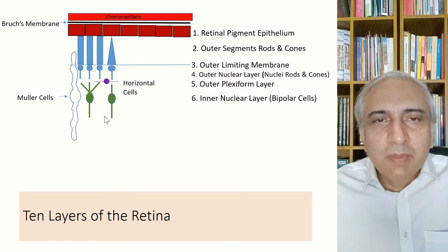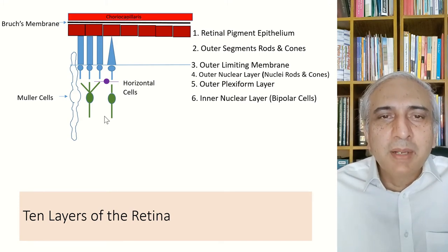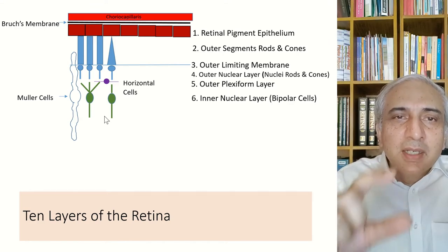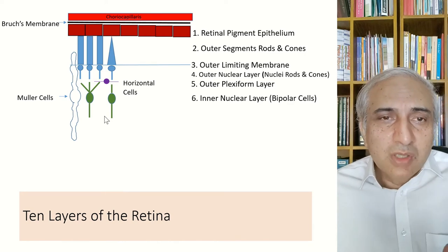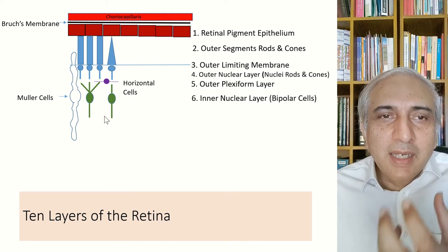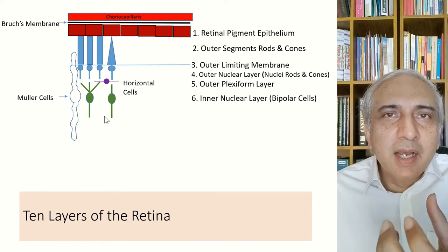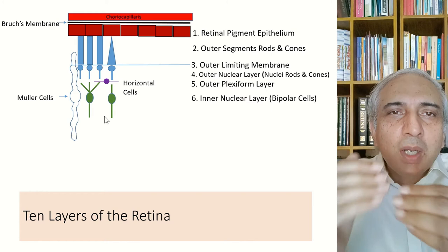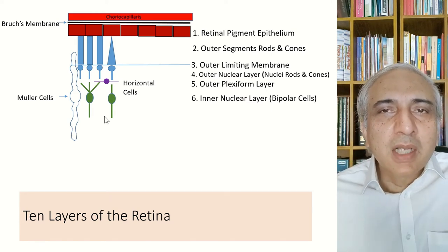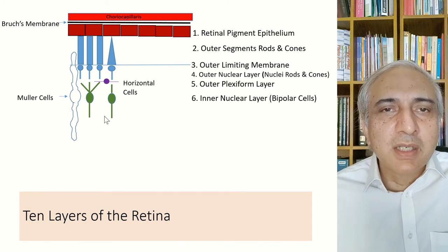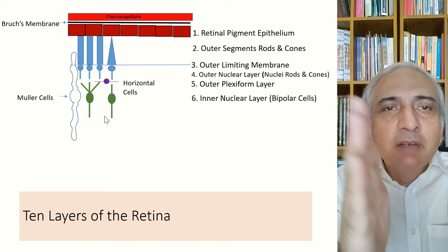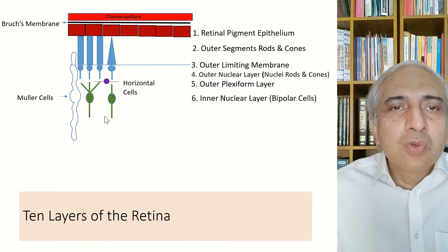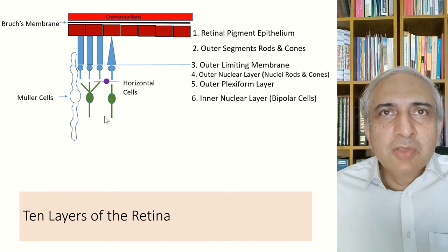The next signaling happens at the inner plexiform layer where ganglion cells connect to multiple bipolar cells. This is how the center-surround effect is generated — producing a bright light with a dark band. In the foveola, to maintain high definition, one cone connects to one bipolar cell. The ganglion and bipolar cells are spread outward to accommodate more cones in the center, giving the fovea its best resolution.